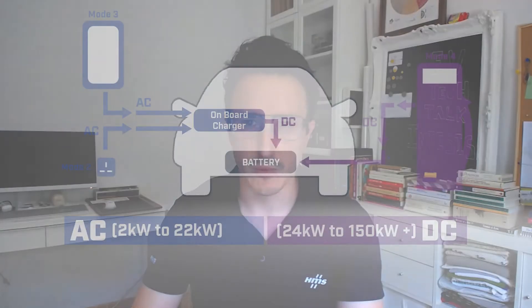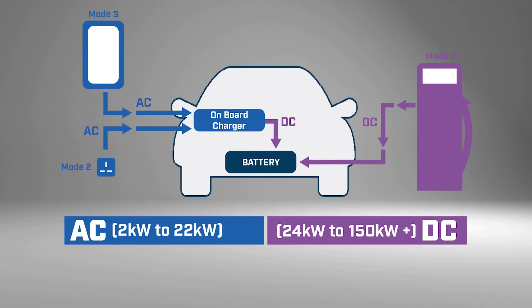To understand if there's a communication going on between the car and the charging station, we need to also understand that there are different types of modes in AC charging and DC charging. Depending on the mode, we will have a faster or slower way of loading the battery. There are different modes in the industry: mode 2, mode 3, and in DC we have mode 4. That type of mode enables a way to connect to the car and some communication between the car, the battery management system, and the charging point.